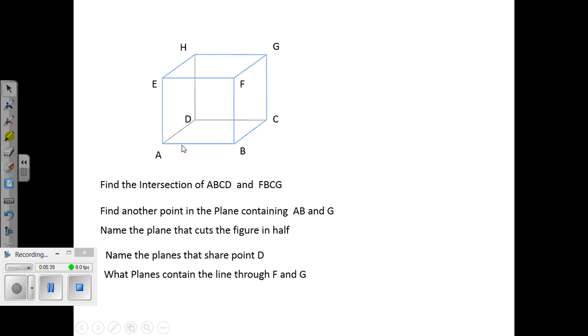You should be able to name them: ADCB, ADFE, and HDCG. What planes contain the line F and G? What planes contain the line through F, G?